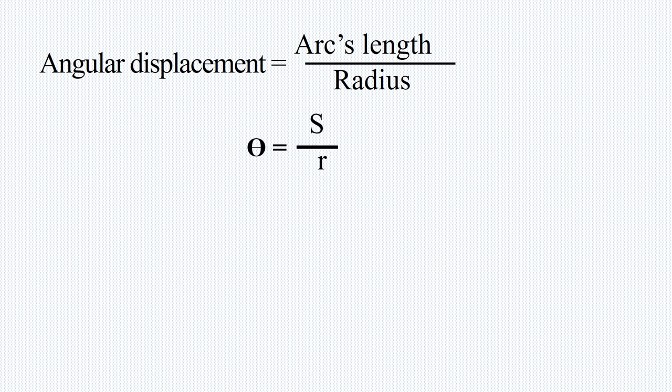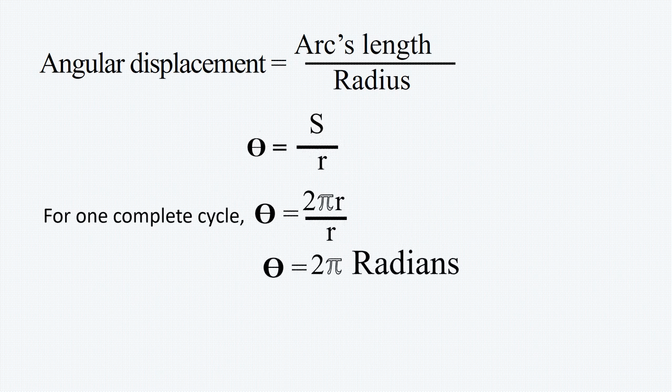It can be written as theta equals s over r. For one complete cycle, the angular displacement equals the circumference, which is 2πr, divided by the radius, and this cancels out to 2π radians. So one complete cycle equals 2π radians, but 2π radians should equal 360 degrees.